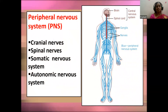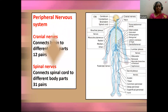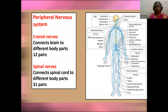The peripheral nervous system is a division of the nervous system containing all the nerves outside the central nervous system. It includes cranial nerves, spinal nerves, somatic nervous system, and autonomic nervous system. Cranial nerves connect the brain to different parts — there are 12 pairs of cranial nerves. Spinal nerves connect the spinal cord to different body parts — there are 31 pairs.